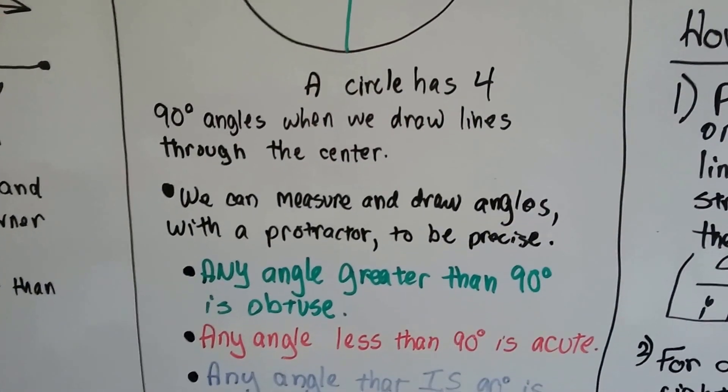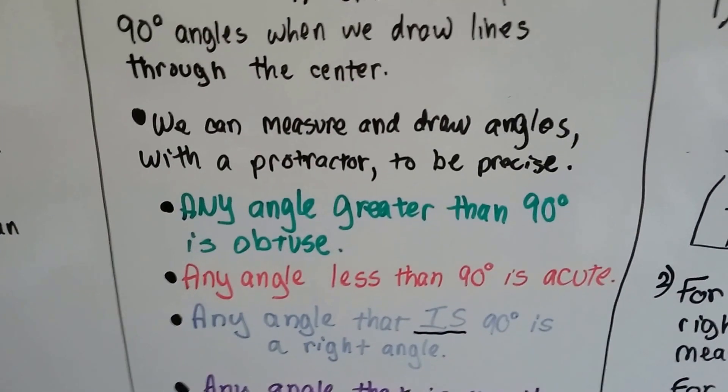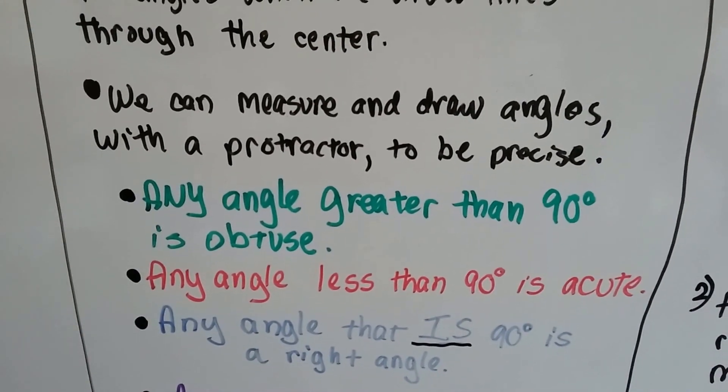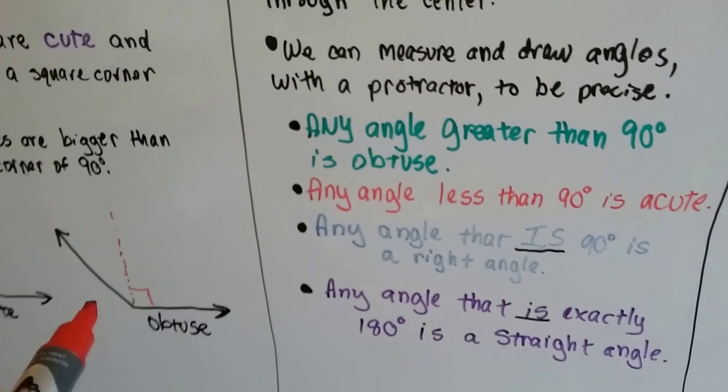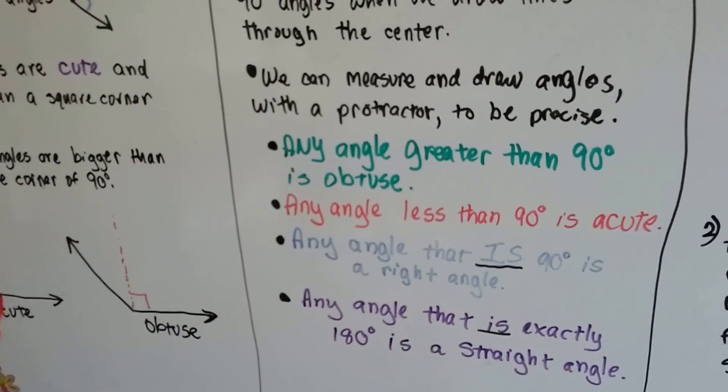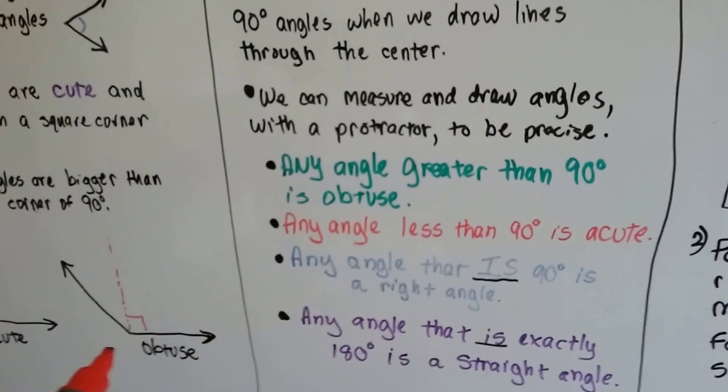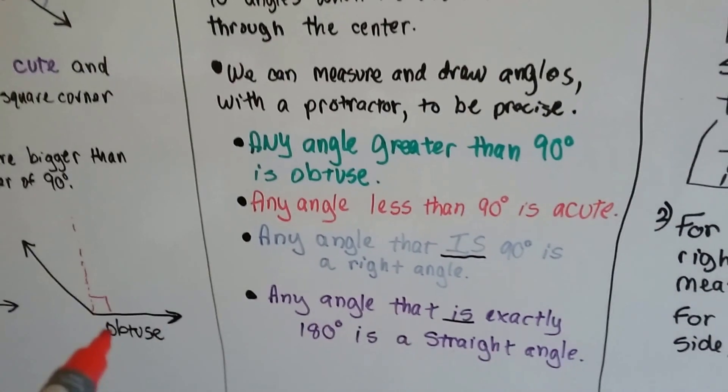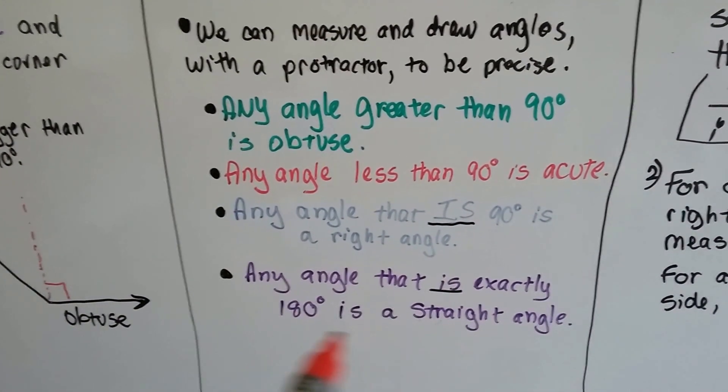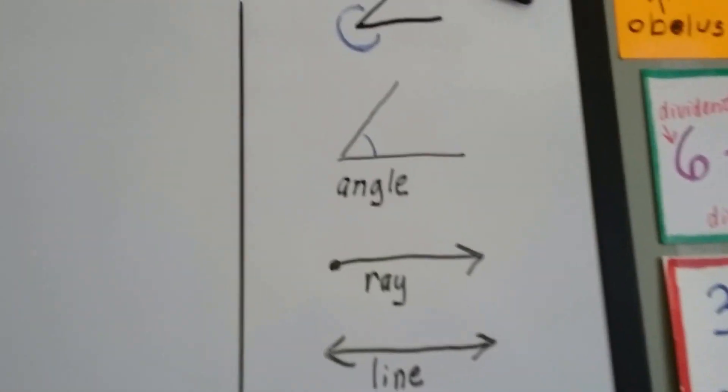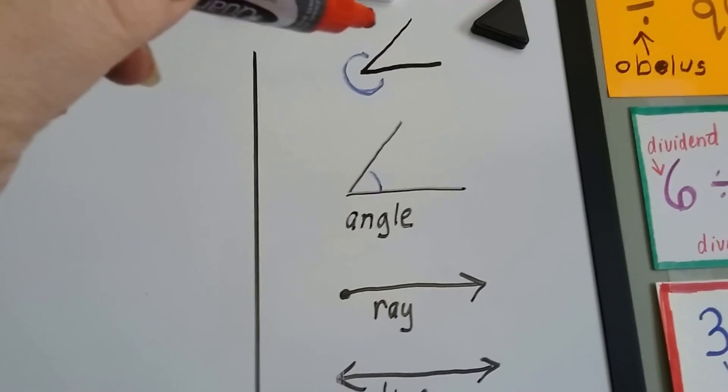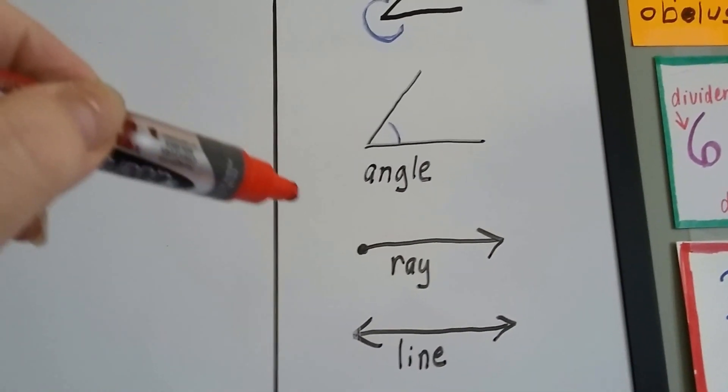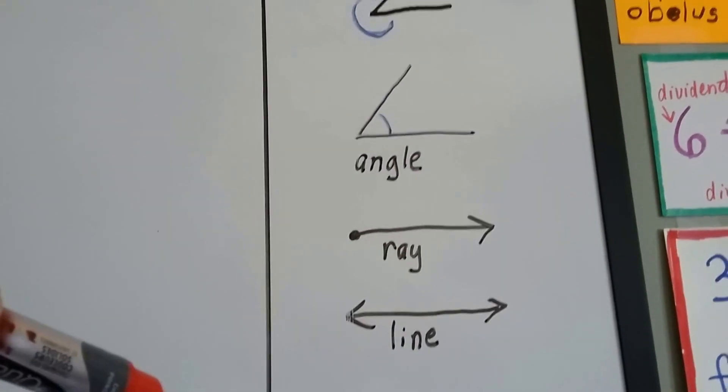So we can measure and draw angles with a protractor to be precise. We can do 37.5-degree angle if we wanted to. Any angle greater than 90 degrees is obtuse. Any angle less than 90 degrees is acute. Any angle that is 90 degrees is a right angle. And any angle that is exactly 180 degrees is a straight angle. Let me show you. This is an angle that opened so big that it wrapped around and almost started closing again.